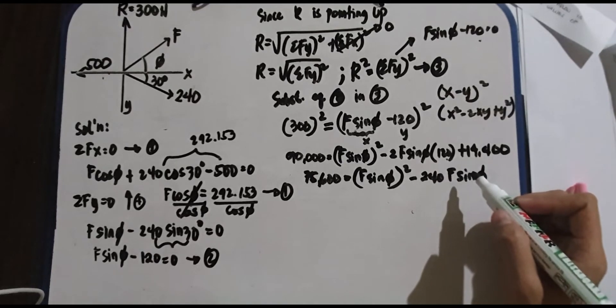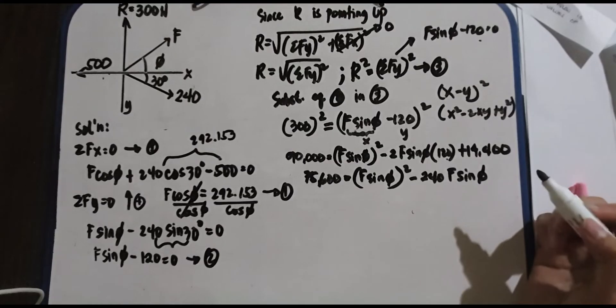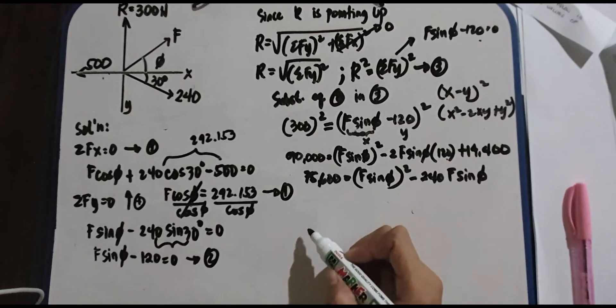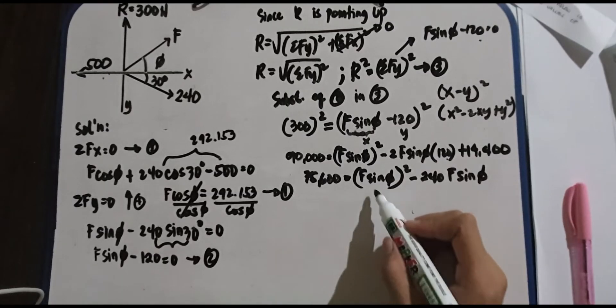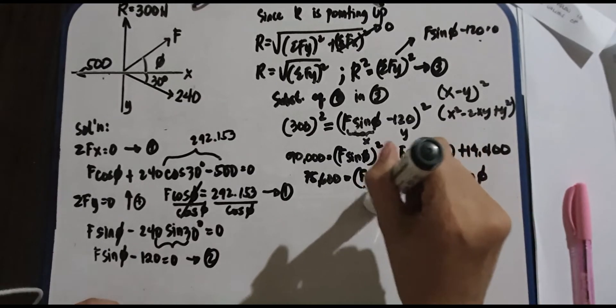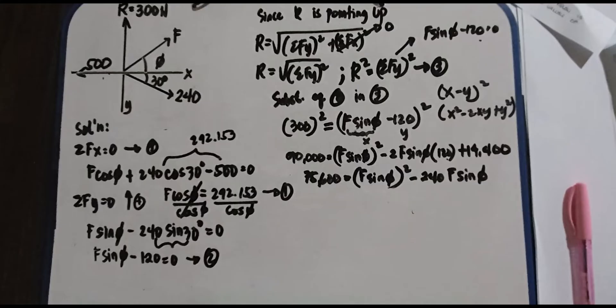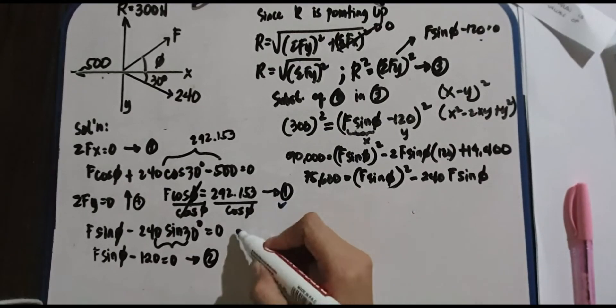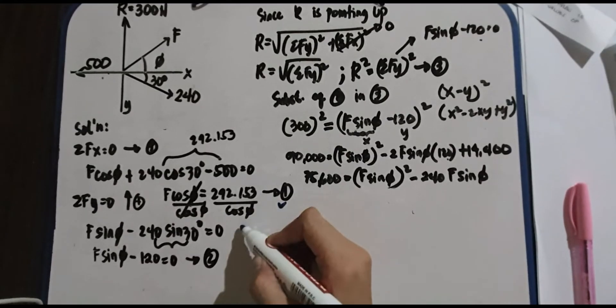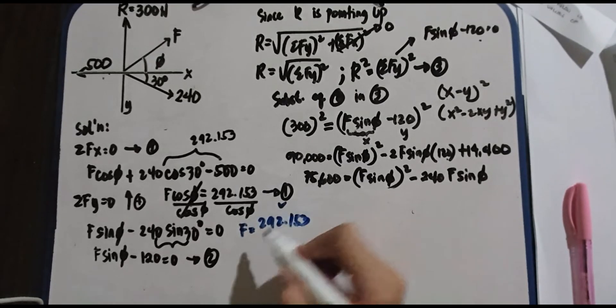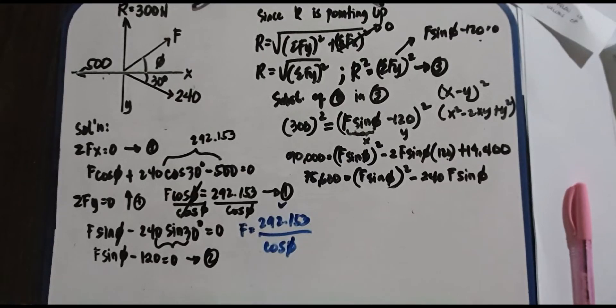Next thing we'll do, you know how to get this, right? How to do quadratic equation. So let's fix this, since we have F sin phi, not just F sin phi, because we'll go back to that. Since we know the F value, where will we get the F value from? We all know that our F value came from here. Let's check this. Let's fix this, we have F, 292.153 all over cosine phi. That is your F.